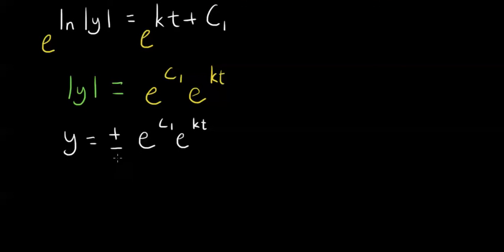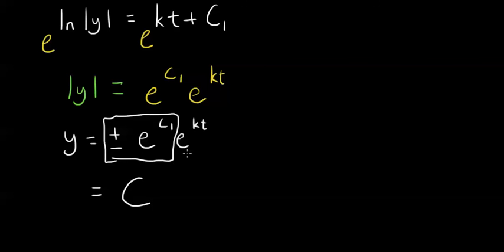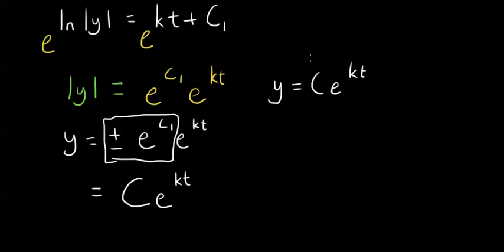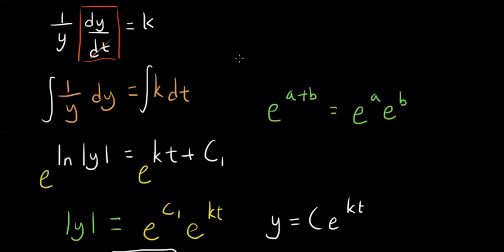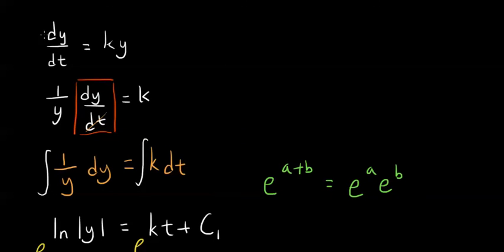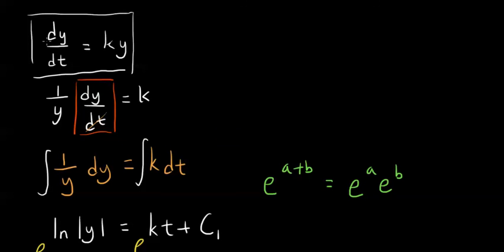Plus or minus e to the c sub 1 is just going to be some constant, since c sub 1 and e are both constants. So let's call that C, giving us y is equal to C times e to the kt. It's a natural exponential function, and we have proven that it is the solution of the differential equation dy/dt is equal to ky.